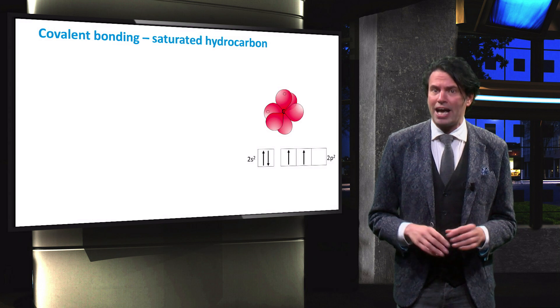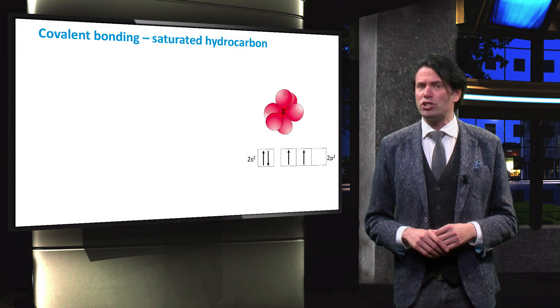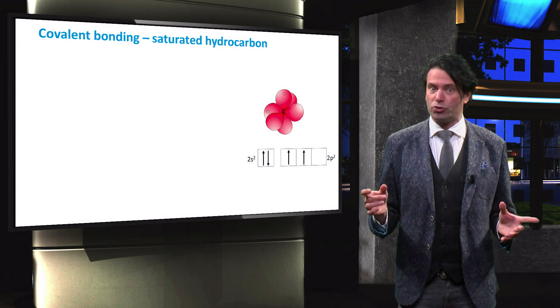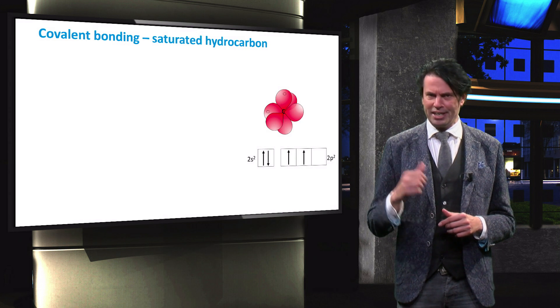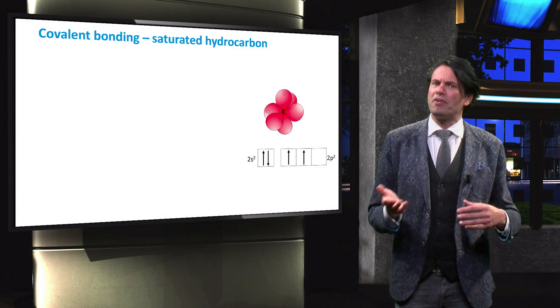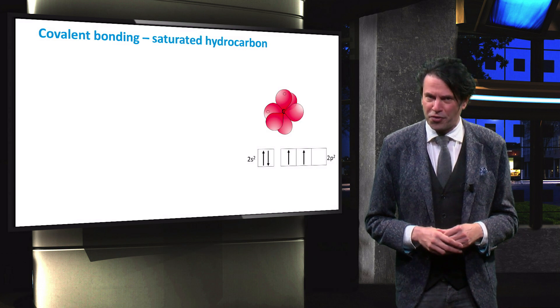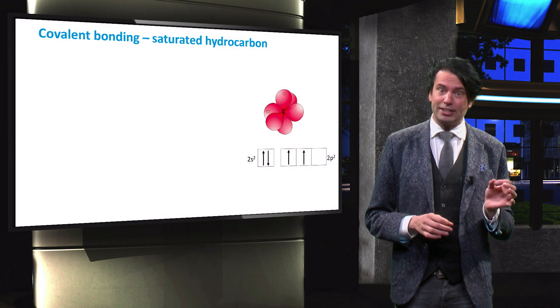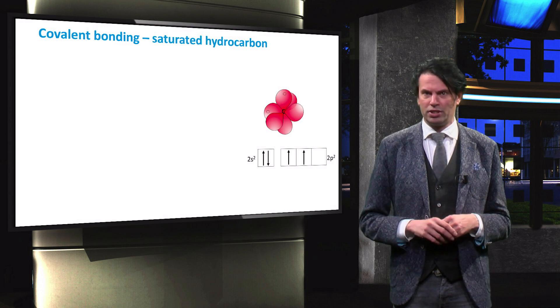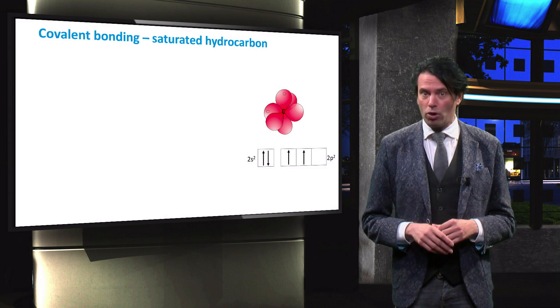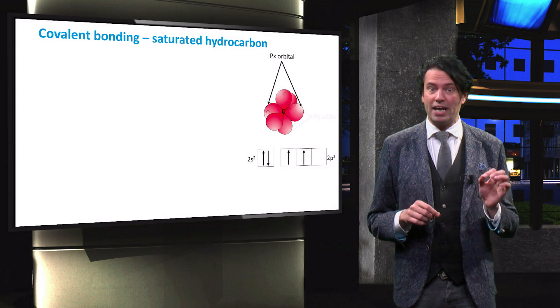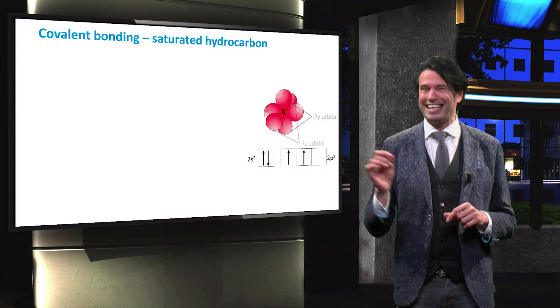Let's take carbon as an example. The spatial arrangement of the p orbital of carbon is shown here. As we have shown in the previous video, the electron configuration of carbon is 2s² 2p². The three 2p orbitals are called the 2px, 2py and 2pz orbitals.